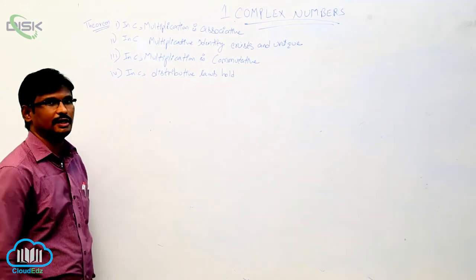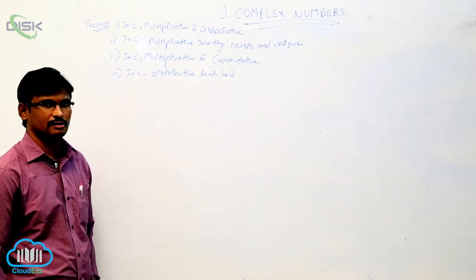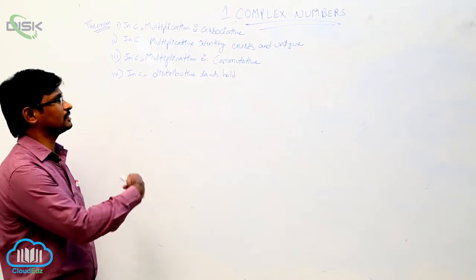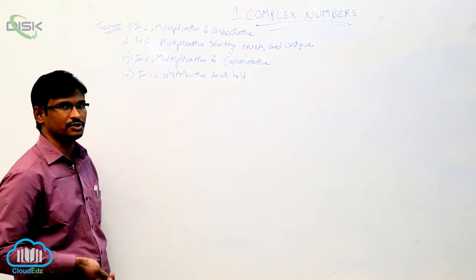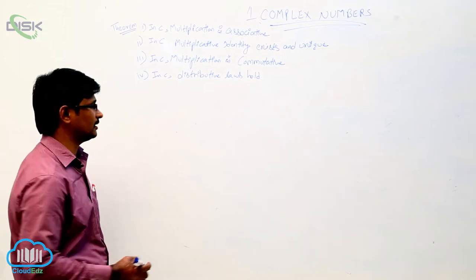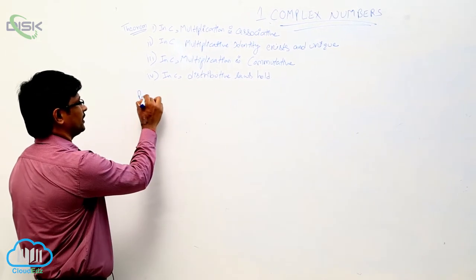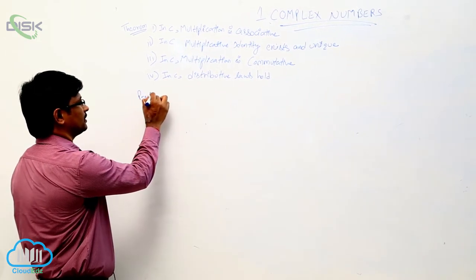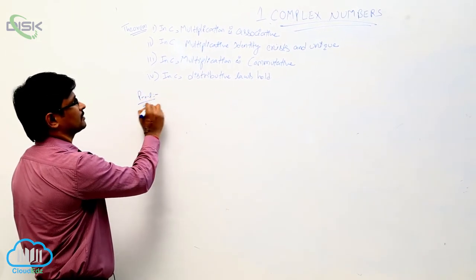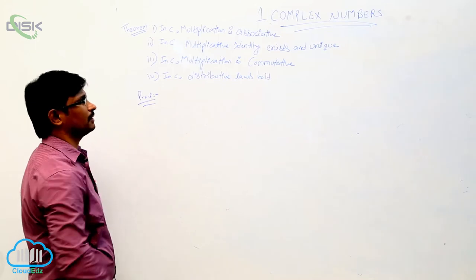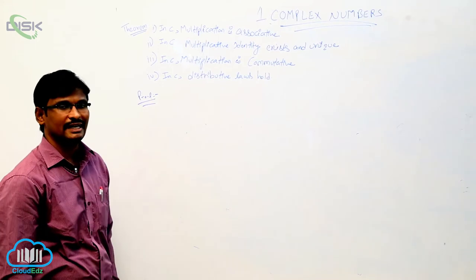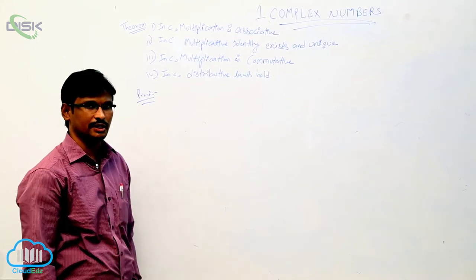We proved just how additive properties. Now we will see the multiplication property. In complex numbers, multiplication property satisfies associative.